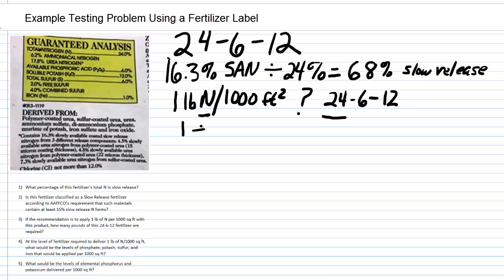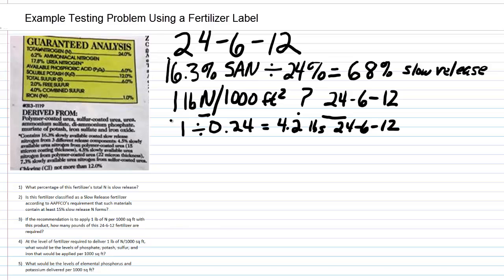We take 1 divided by 0.24, which equals just a little bit more than 4.1 — let's round it to 4.2 pounds of 24-6-12. If you apply that uniformly to 1,000 square feet, you will be delivering one pound of nitrogen. That takes care of question three.